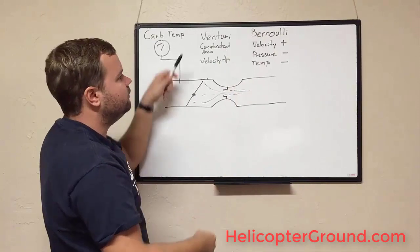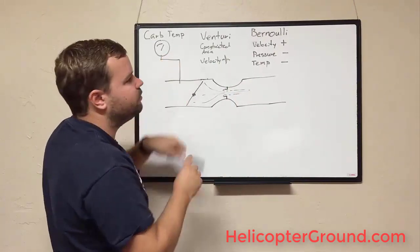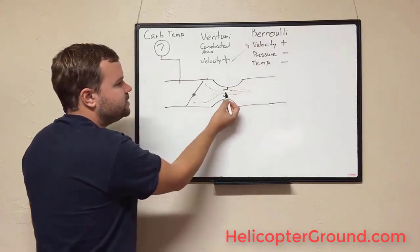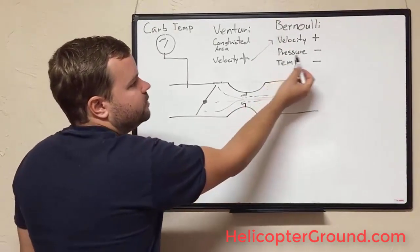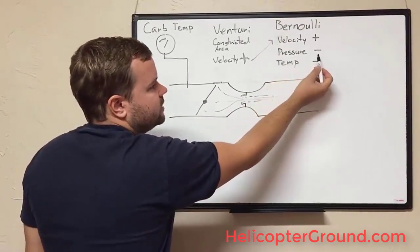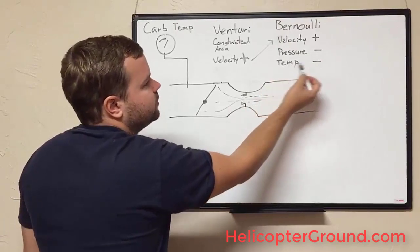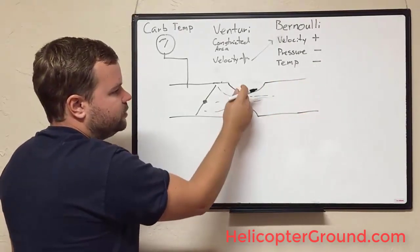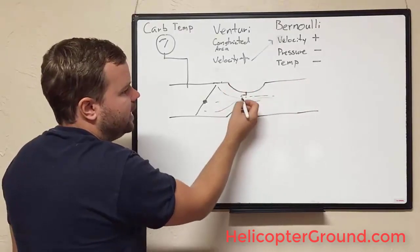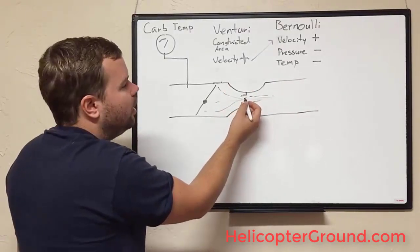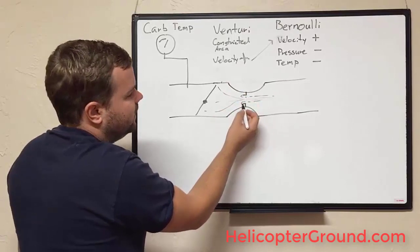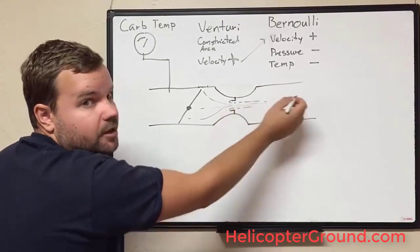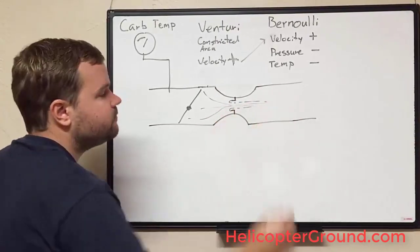Everyone always lumps Venturi and Bernoulli together, but they're actually two different things. Venturi is simply that velocity goes up. Bernoulli figured out that as velocity increases, pressure decreases — and also temperature decreases. So inside the Venturi, the air is going very quickly, its pressure is low, and its temperature drops. That's actually why they put the fuel nozzles in there — because you have low pressure sucking the fuel out for the engine.